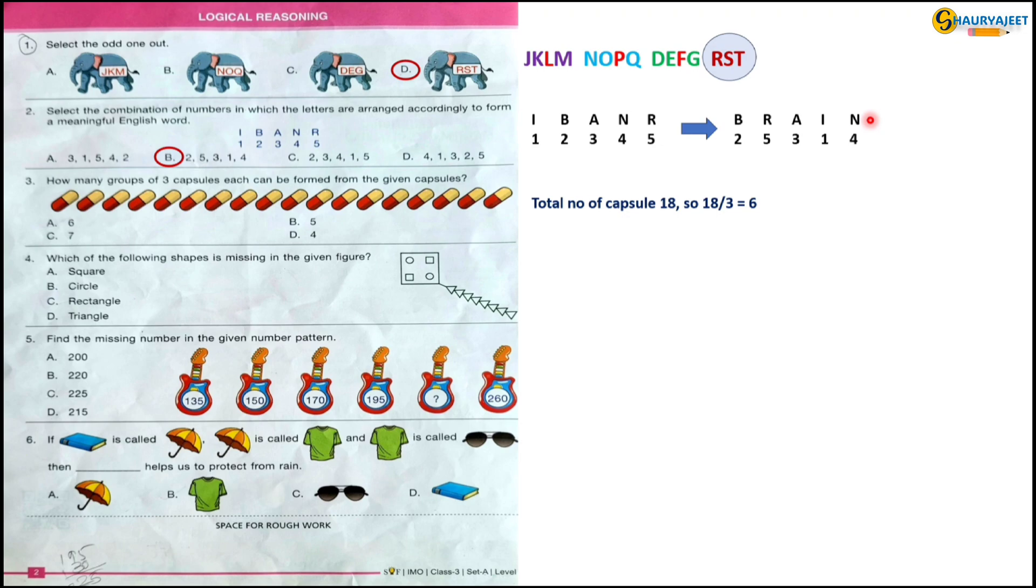Question 4: Which of the following shapes is missing in the given figure? In the given figure, square is present, circle is present, triangle is present, but rectangle is not present. So the correct option is option C, rectangle.